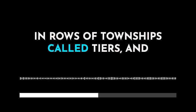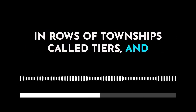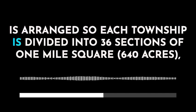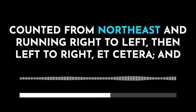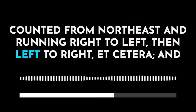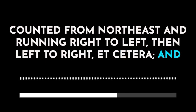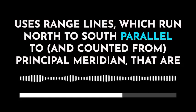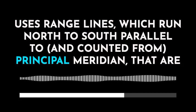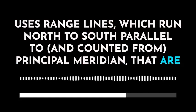Townships are arranged in rows called tiers, and each township is divided into 36 sections of 1 mile square, counted from the northeast and running right to left, then left to right, and so on. It also uses range lines, which run north to south parallel to the principal meridian, are 6 miles apart, and are arranged in rows called ranges.